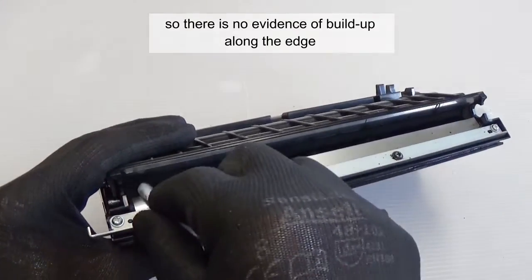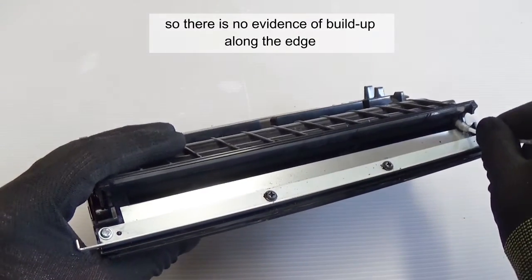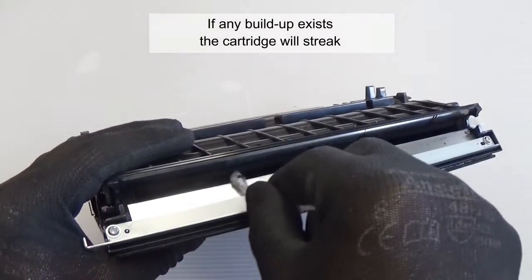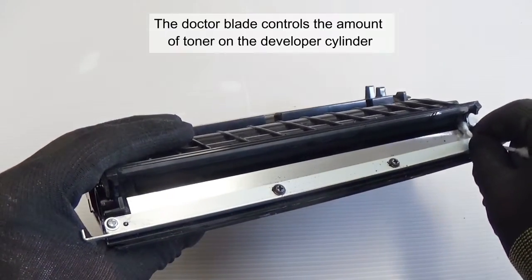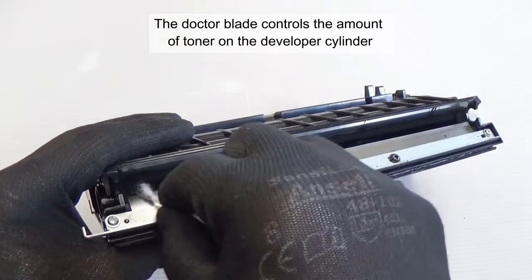Clean the edge of the doctor blade so there's no evidence of build up along the edge. If any build up exists, the cartridge will streak. The doctor blade controls the amount of toner on the developer cylinder.